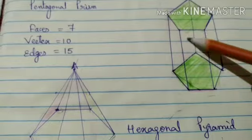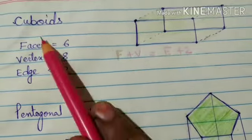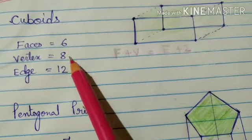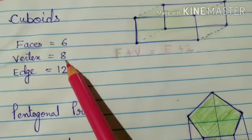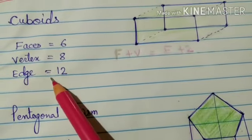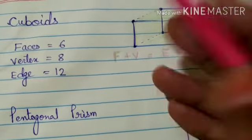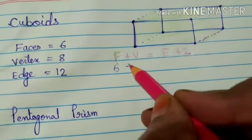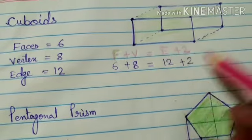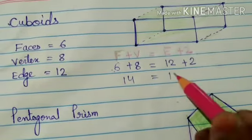So like this we are counting for the edges. Now in the cuboid, as you have seen, the faces are 6 and the vertices are 8. If you will add 6 plus 8 it is 14. And if you will see, the edges plus 2: 12 plus 2 is also 14. It means F value is 6 and plus V is 8, and it equals 12 plus 2 — so it will become 14 on both sides.